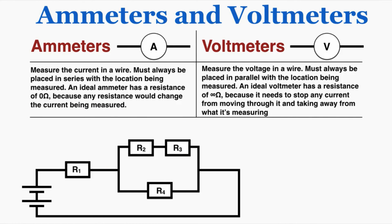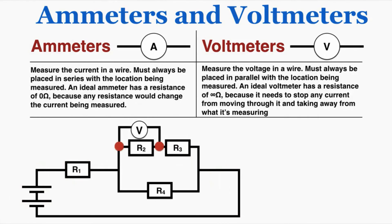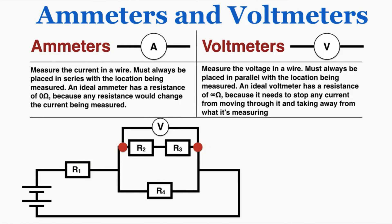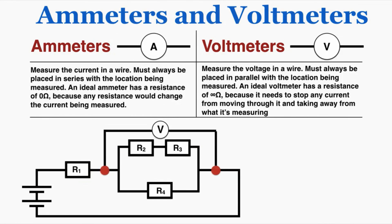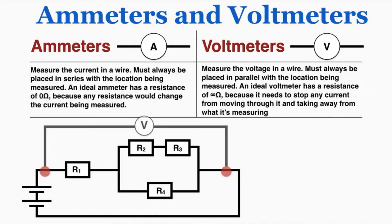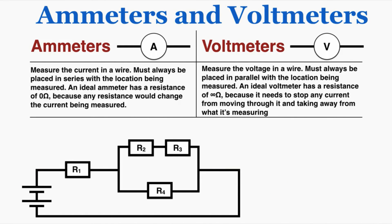There will be specific problems asking where to place voltmeters and ammeters to measure voltage and current in different resistors. For example, on a circuit with multiple resistors, a voltmeter can measure the voltage drop across resistor 1, resistor 2, resistor 3, resistor 4, across both resistors 2 and 3, across the whole parallel arrangement, or across all resistors together. For ammeters, one can measure the current through resistor 1 (which is also the total current), another can measure the current in resistor 4, and another in resistors 2 and 3.